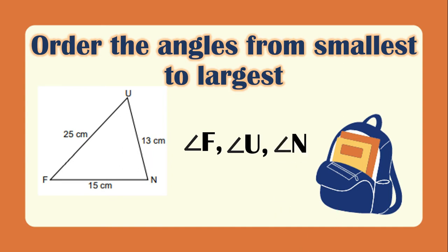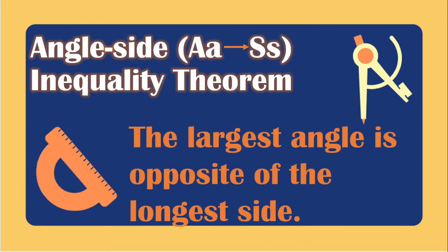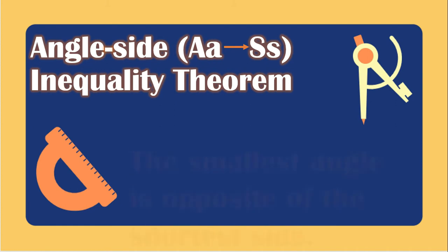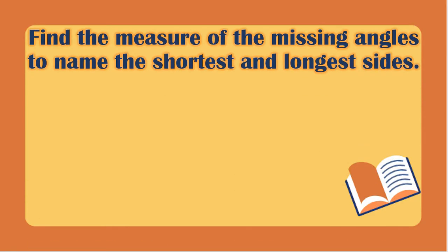Next, we have the angle side inequality theorem, wherein the largest angle is opposite the longest side and the smallest angle is opposite the shortest side. We will find the measure of the missing angles to name the shortest and the longest side.